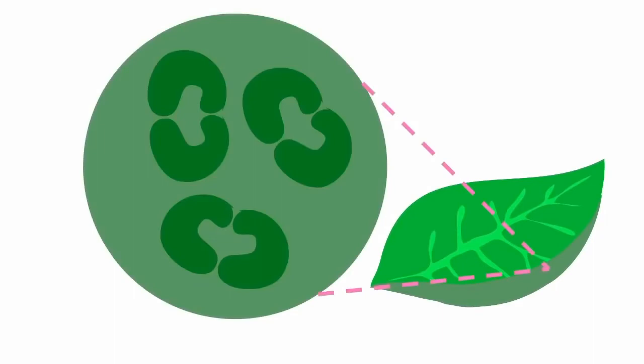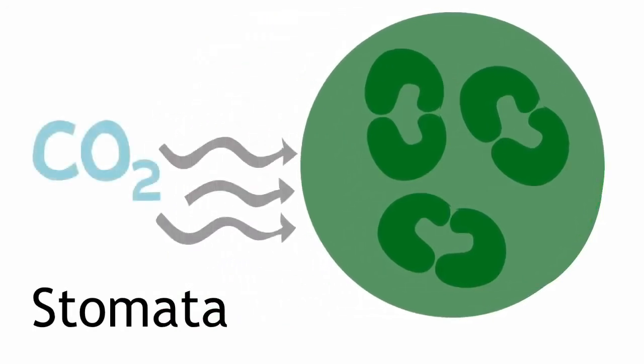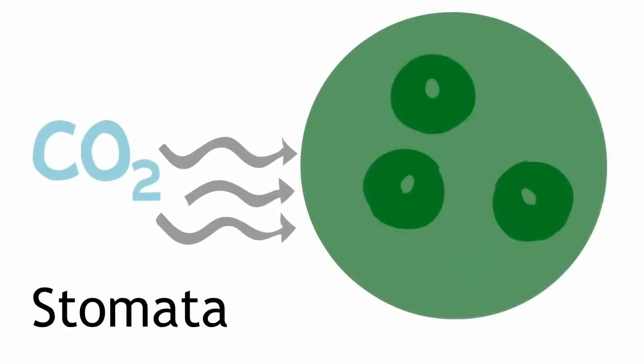That's where the bottom of the leaf comes in. It's got these little pores called stomata, which open up so carbon dioxide can diffuse into the leaf. They're controlled by sausage-shaped guard cells, which open up to let carbon dioxide in, but they can also close the stomata to prevent other things like water from escaping.